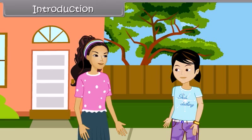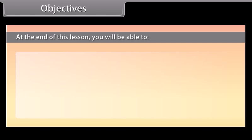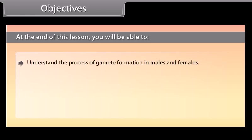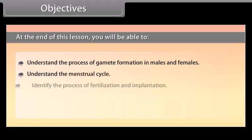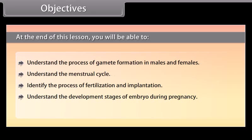I can explain you how a child is born. At the end of this lesson, you will be able to understand the process of gamete formation in males and females, understand the menstrual cycle, identify the process of fertilization and implantation, understand the development stages of the embryo during pregnancy, and understand parturition and lactation.